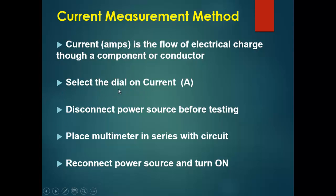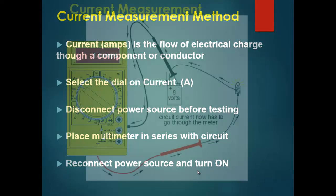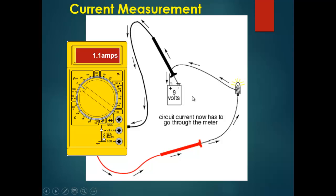For current measurement, select the dial on current, shown by the symbol A. Disconnect the power source before testing, then place the multimeter in series with the circuit and reconnect the power source to energize it. For example, the positive terminal is connected to a bulb, the other terminal of the bulb is connected to the positive lead, and the negative probe is connected to the negative terminal — this way the series current flows through and is measured by the meter.